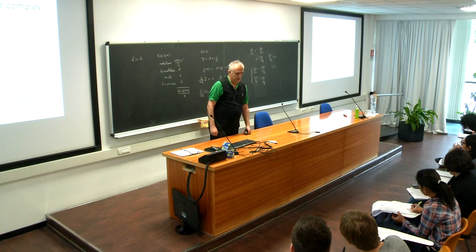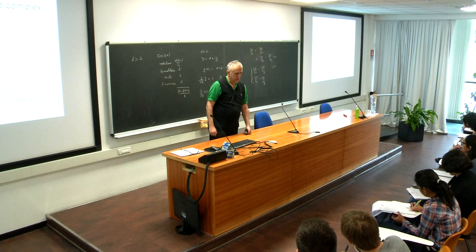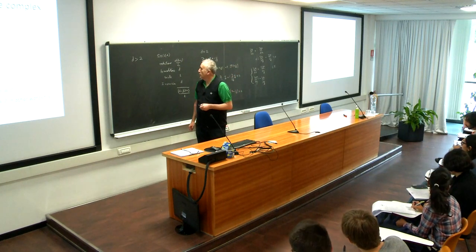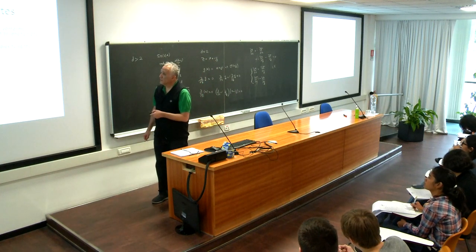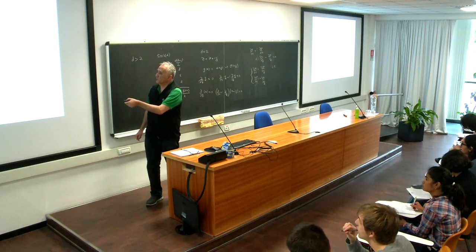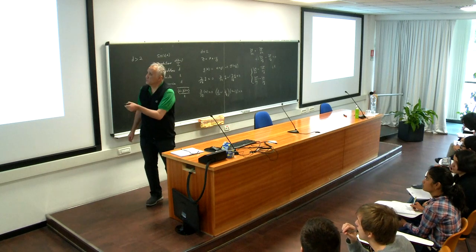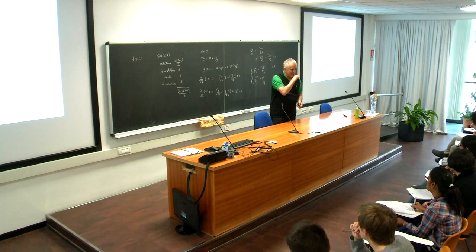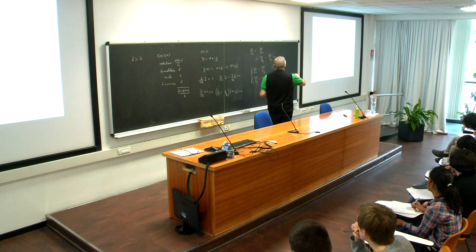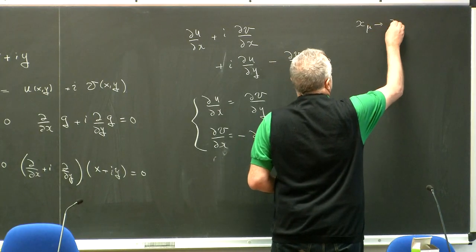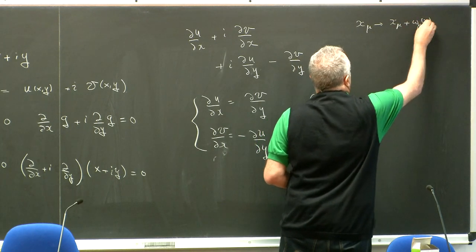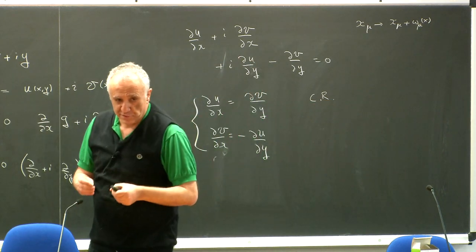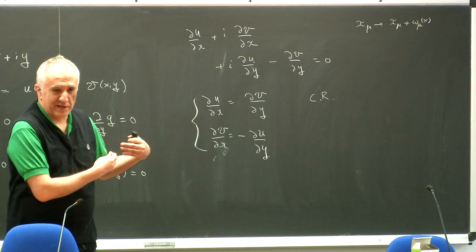Student question: when you showed the angle-preserving property, was that related only to two dimensions? Answer: angle preserving is in all dimensions. This is a general condition that if you maintain that the metric changes only by a factor. That's one of the exercises you will do — you take coordinates, make an infinitesimal transformation, impose that condition, get conditions on the transformation, and then also show that the angle is preserved. I will show you only in two dimensions that the angle is preserved in a second.